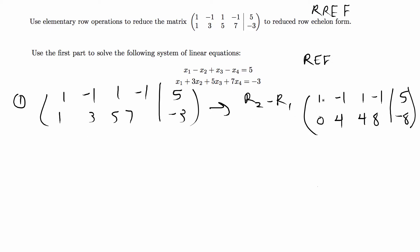That first operation already gives me row echelon form because we have the leading coefficient being farther to the left on the first row than the second row. Now we just have to make this a 1 and get this to be 0.